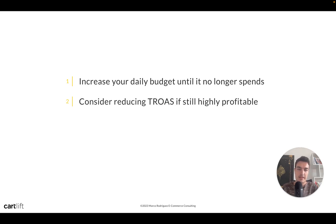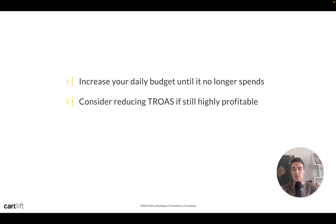If you're spending $300 per day but your budget is $400 and you never reach it, increasing the budget further won't help. In that case, consider reducing your target ROAS goal — if you're still very profitable, lowering the target tells Google to spend more, which is effectively scaling. It's a fine line that varies case by case, but reducing target ROAS while remaining profitable is a relatively easy way to scale.